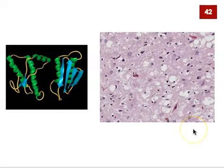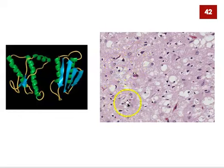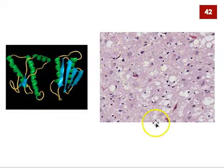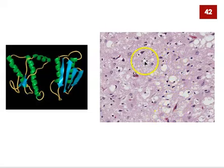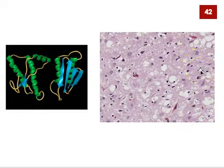Looking at the tissue section on the right: most of the pinkish-purple color can be ignored. The purple areas are nuclei of cells — neurons and glial cells in the brain. What to focus on is the white circles: everywhere you see a white circle, there is nothing there. Those are empty holes in the brain of the person who died of prion disease. This is why they are called spongiform diseases — they literally create holes in the brain, making it look like a sponge.